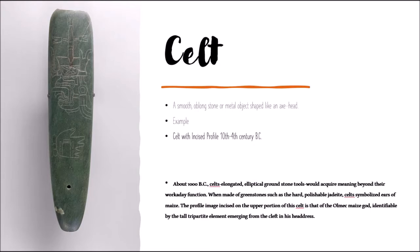When made of green stone, such as the hard polishable jadeite, Celts symbolized ears of maize, which is corn. The profile image in this particular work, incised on the upper portion of this Celt, is that of the Olmec maize god, identifiable by the tall tripartite element emerging from the cleft of its headdress.